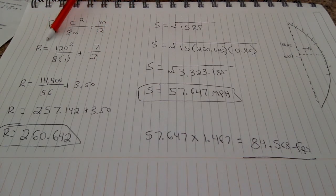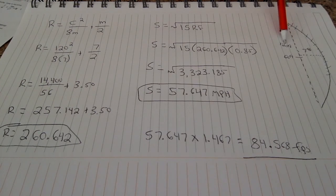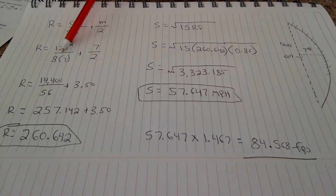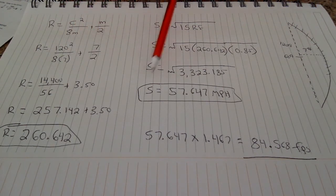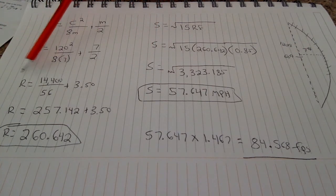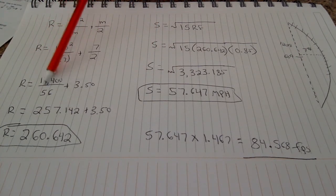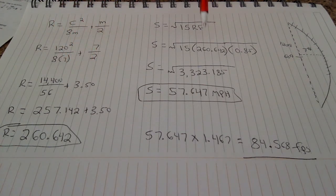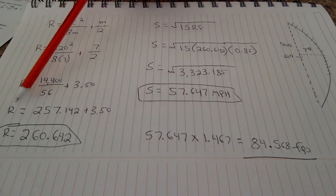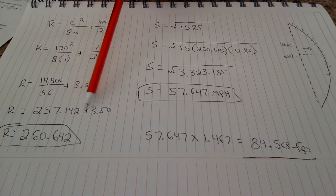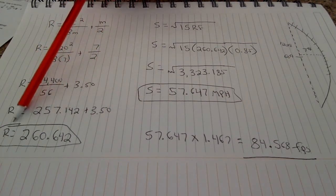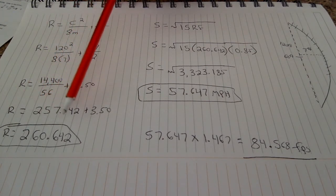So now we have radius equals 120 feet, the length of the entire skid mark, squared, divided by 8 times 7, which is the midpoint, plus 7 divided by 2. That gives us r equals 14,400 divided by 56 plus 3.50. And then break that down even more. Radius equals 257.142 plus 3.50. And then you get a total radius of 260.642.